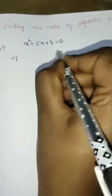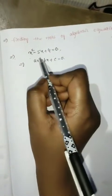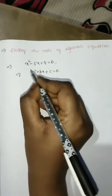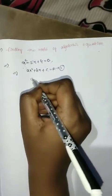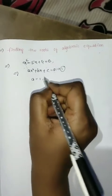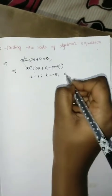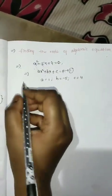The first method is factorization. By using factorization, we are solving for the roots of the given equation. The equation is in the form ax squared plus bx plus c equals 0. Comparing with the given equation, a equals 1, b equals minus 5, and c equals 4.